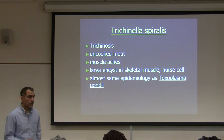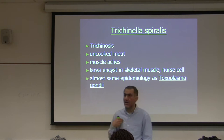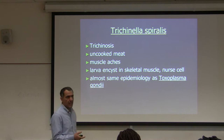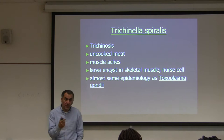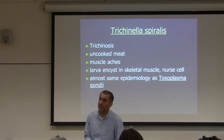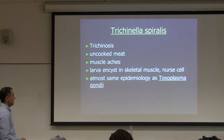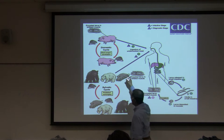The epidemiology is almost the same as Toxoplasma gondii — most humans get it from eating raw meat. Farm animals, most likely pork, get it because pigs are fed garbage, and rodents in their pens carry Trichinella. That's how the domestic life cycle continues.